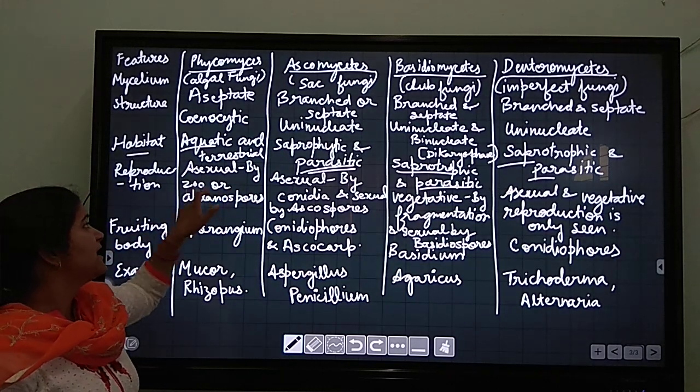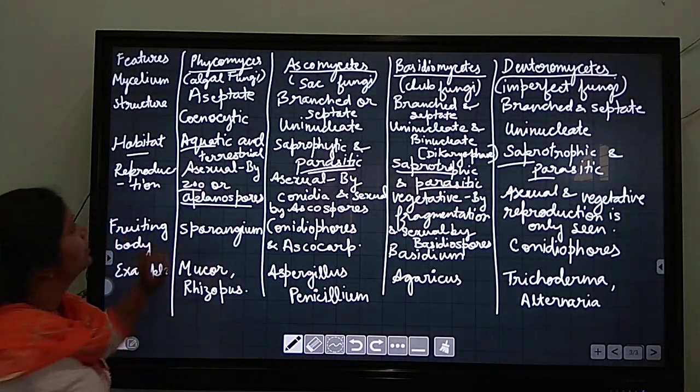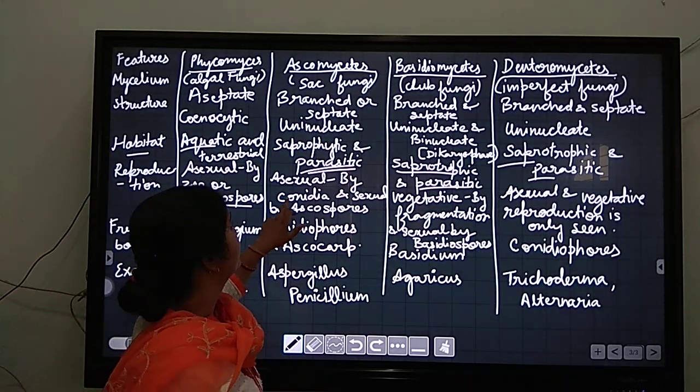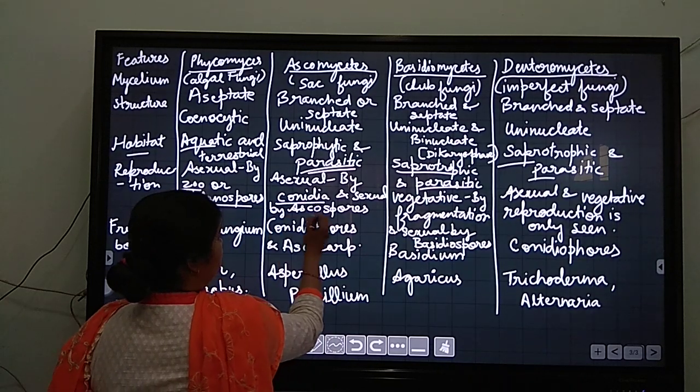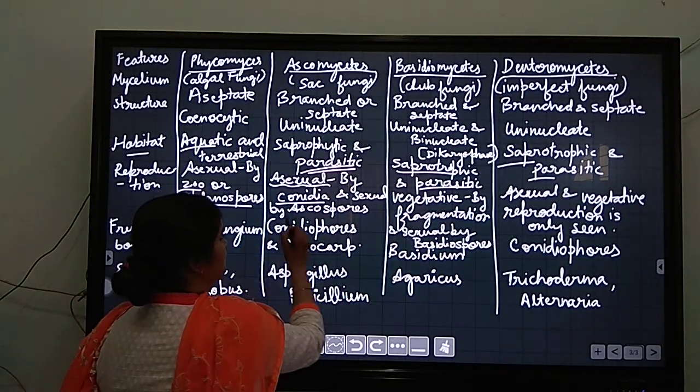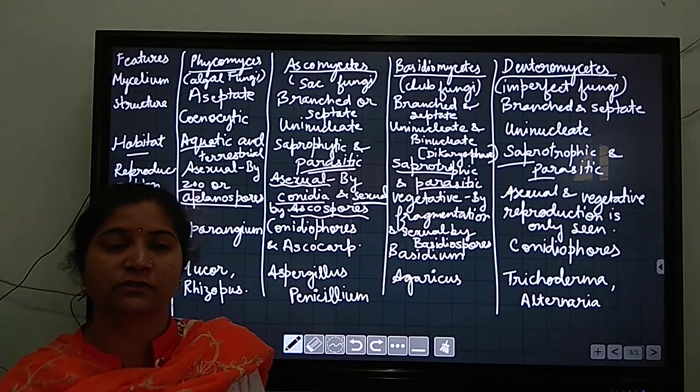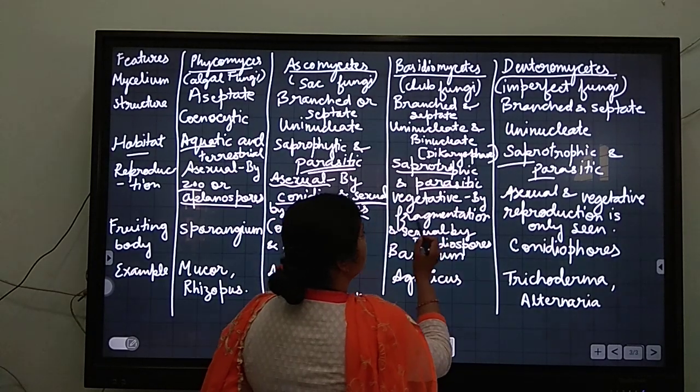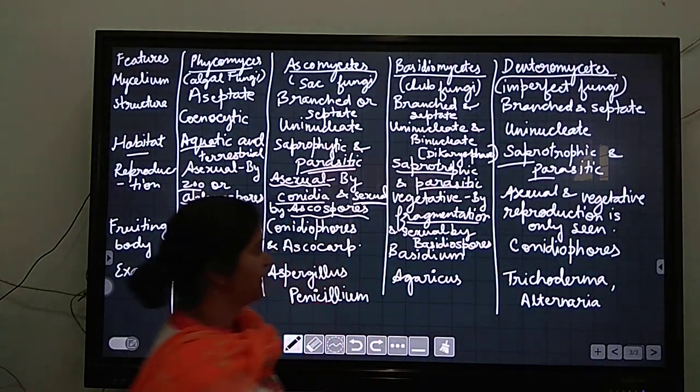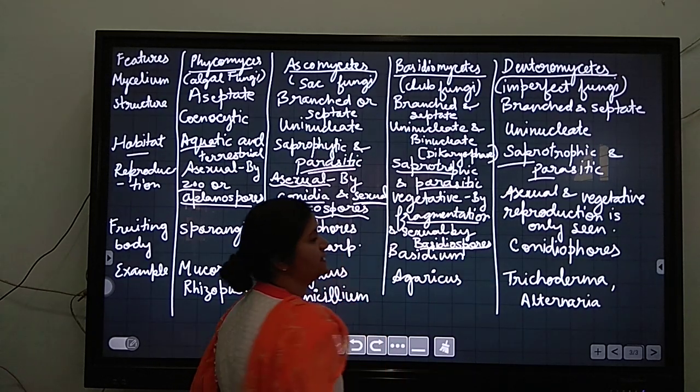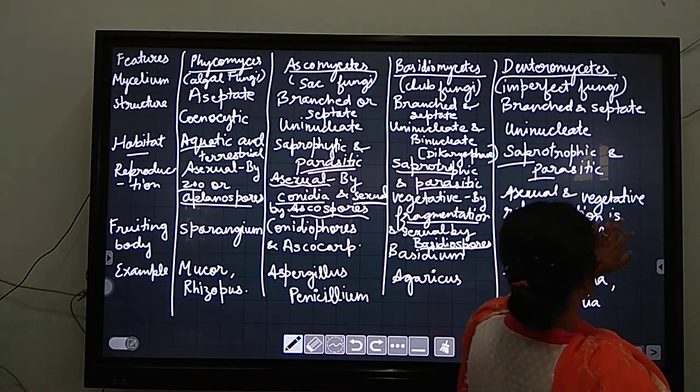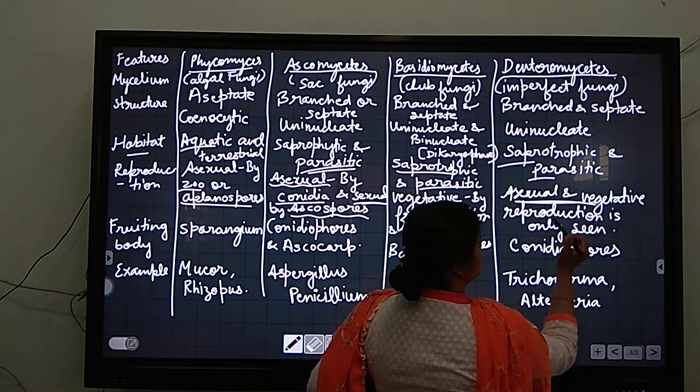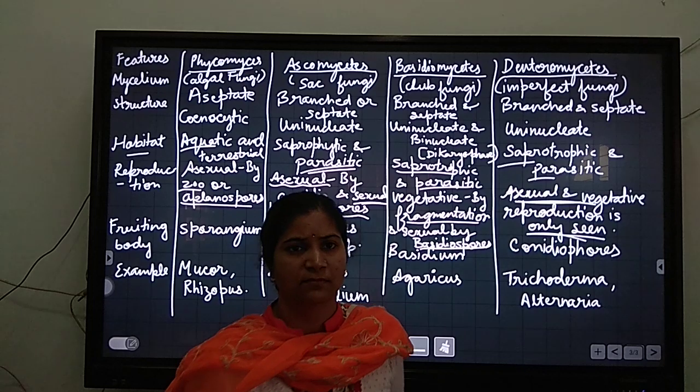Reproduction. Asexual is by zoospores or aplanospores in phycomycetes. Here in ascomycetes, conidia called spores are asexual spores and sexual spores are ascospores. Two types of spores can be found - asexual conidia and sexual ascospores. Vegetative reproduction is by fragmentation and sexual reproduction forms basidiospores. Here in deuteromycetes, asexual and vegetative reproduction is only seen. Reproduction is only seen. This is an important point.